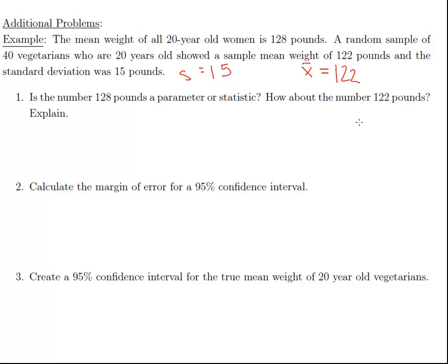The standard deviation is 15, so s equals 15. We want to compare that to the parameter 128. The parameter is 128 for all women, so that's a parameter, and we want to compare that to the population of vegetarians. This is a statistic because it comes from a sample.